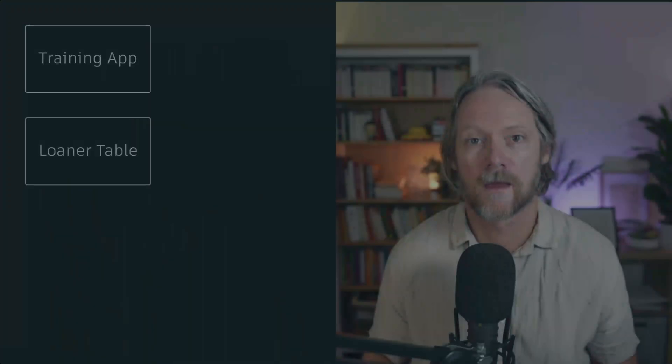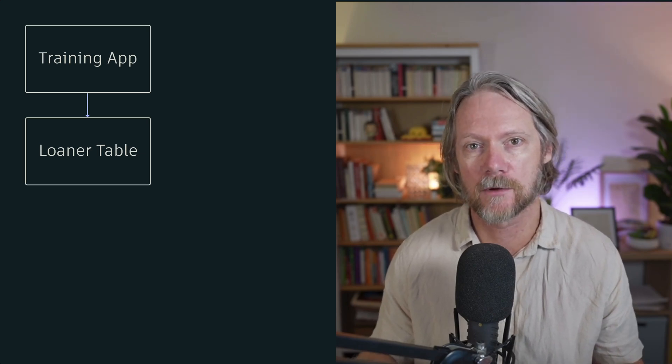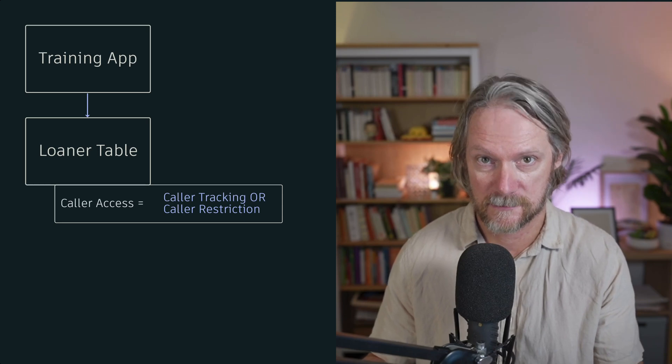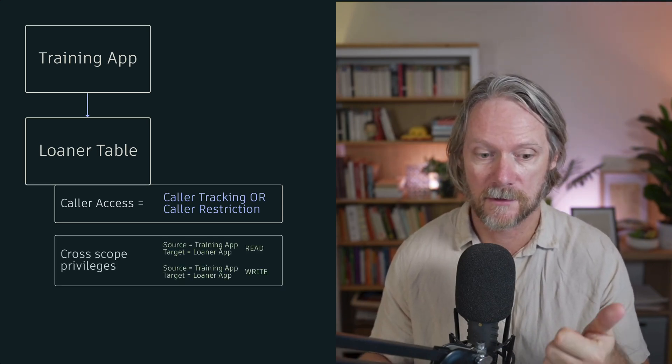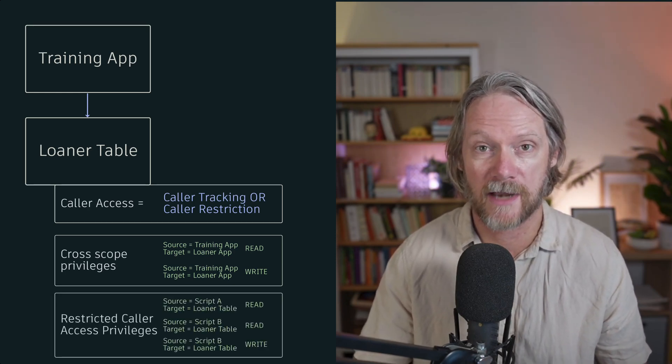Let's take a look at what it would look like from the other side — if we were actually the developer of the training app and we wanted access to this learner request table in the learner request application scope, what do we need to do as far as development and deployment? When we develop this application in a dev instance and promote it to another instance, how do we actually get the permissions that our own application needs to function as designed?